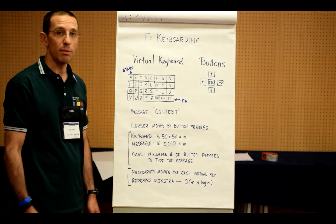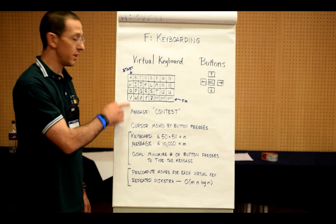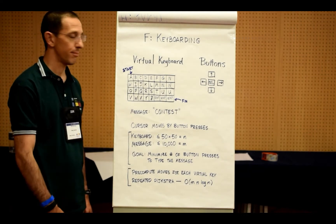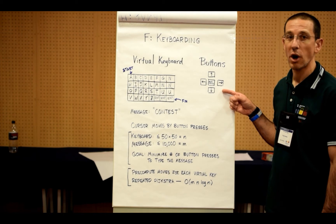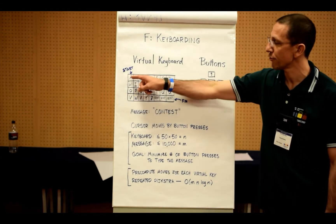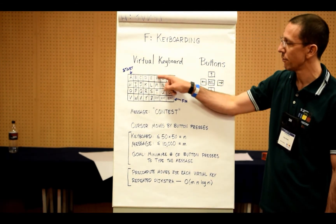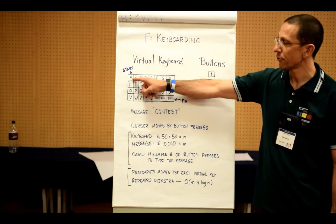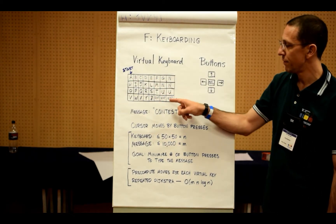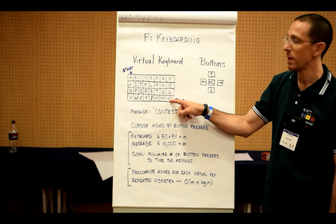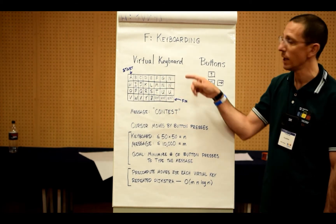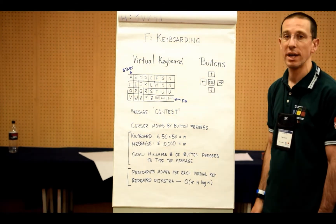For this problem you're given a virtual keyboard and a message that you want to type using that virtual keyboard. You're also given a set of hardware buttons that you can use to move a virtual cursor around this virtual keyboard. Your virtual cursor always starts at the top left and you always want to finish your message on an enter key, but that may be placed in a different position. In fact, the virtual keyboard may be changing depending on the input.